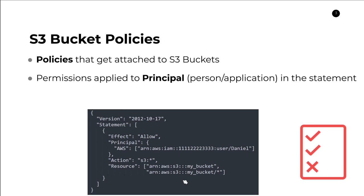There's also another concept which is kind of a legacy concept that bucket policies replace — these are called ACLs or access control lists. These are a legacy way to manage permissions to your S3 bucket and objects, and the guidance from AWS is to no longer use ACLs. They are still supported, however, and if you're trying to manage permissions to your buckets or objects, use bucket policies over ACLs.